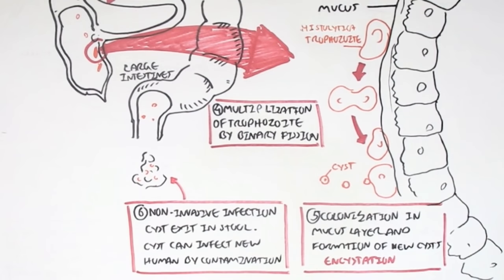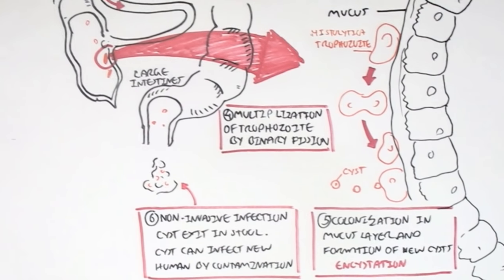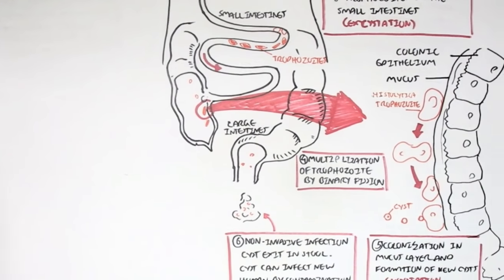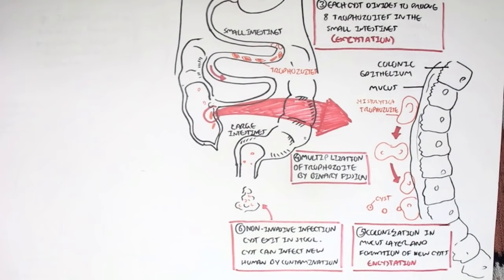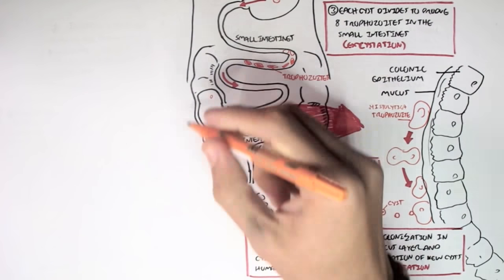Essentially, in the non-invasive infection, these trophozoites will live within the human asymptomatically and might produce some discomfort and some diarrhea, but nothing invasive, hence the name non-invasive infection, and the cysts will just exit out of the body.